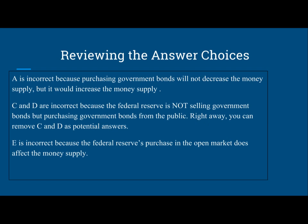C and D are incorrect because the Federal Reserve is not selling government bonds. A is incorrect because purchasing government bonds will not decrease the money supply — it would increase the money supply. E is also incorrect because the Federal Reserve's purchase in the open market does affect the money supply.